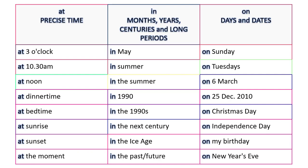We can say: in May, in summer, in the summer, in 1990, in the 1990s, in the next century, in the ice age, in the past, in the future.